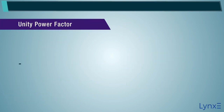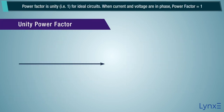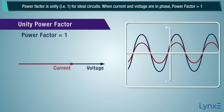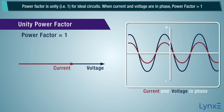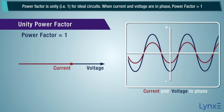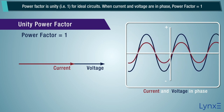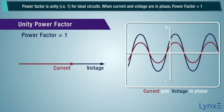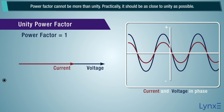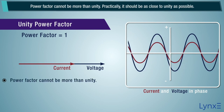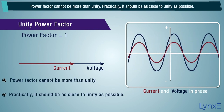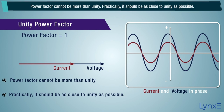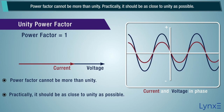Unity power factor: power factor is unity, that is 1, for ideal circuits. When current and voltage are in phase, power factor equals 1. Power factor cannot be more than unity. Practically, it should be as close to unity as possible.